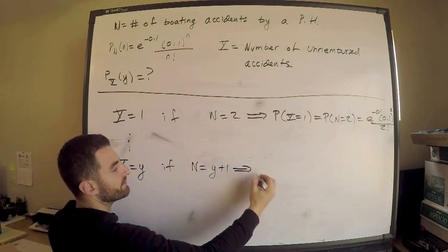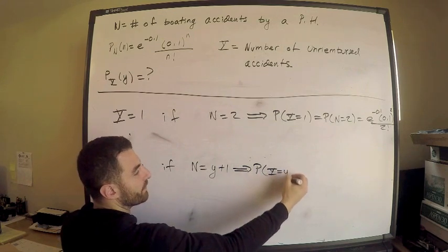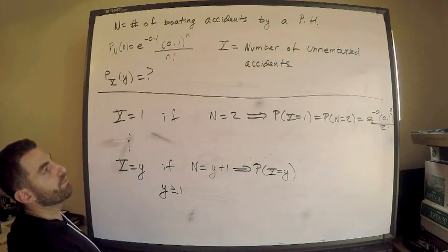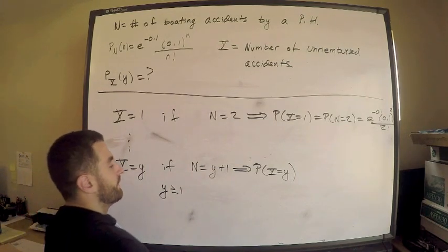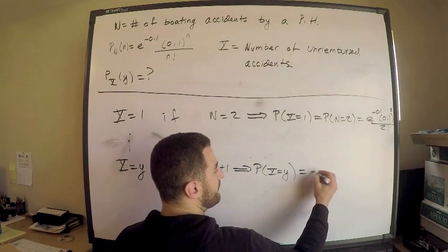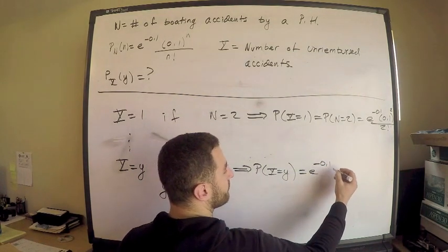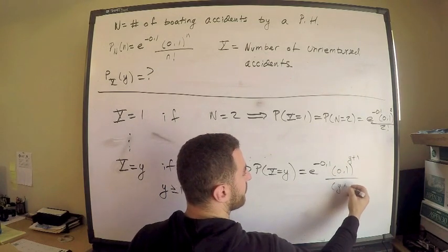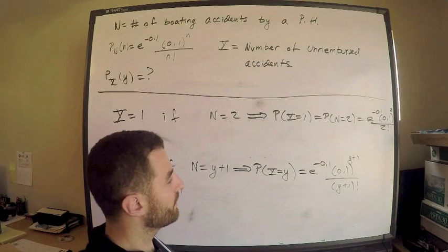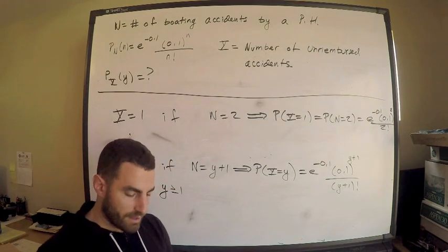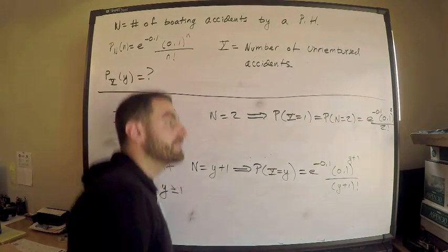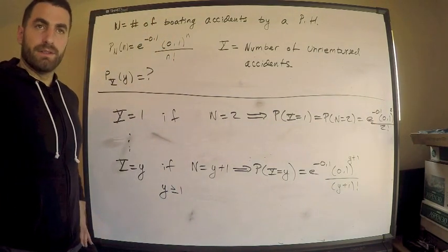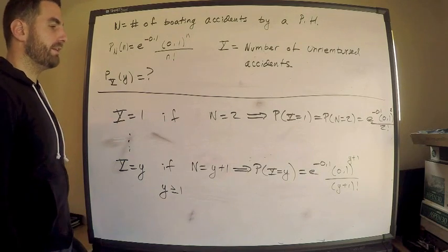So this implies that the probability of Y equaling y, and this is actually only true for Y greater than or equal to one, because we dealt with Y equals zero separately. This is equal to e^(-0.1), 0.1^(Y+1), divided by (Y+1) factorial. We have everything. If you look at your options, we absolutely need to write it as a piecewise defined probability mass function. But we have it.